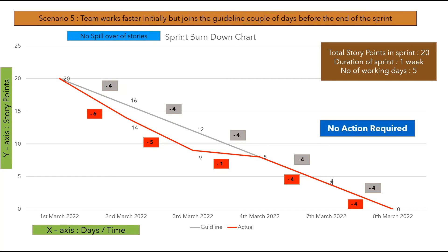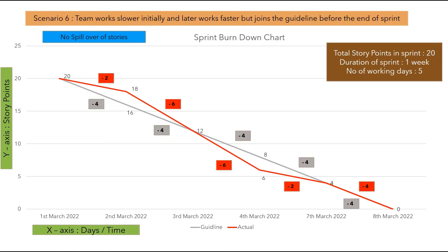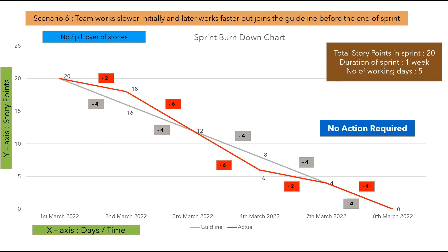In another scenario, the team works slower initially and then faster. On the first two days, the actual line is above the guideline, meaning the team is working slower. On days 3 and 4, the actual line is below the guideline, meaning the team is working faster. By the end of day 4, the team joins the guideline, and on the last day they burn down 4 story points, completing all 20. No action is required in this scenario.